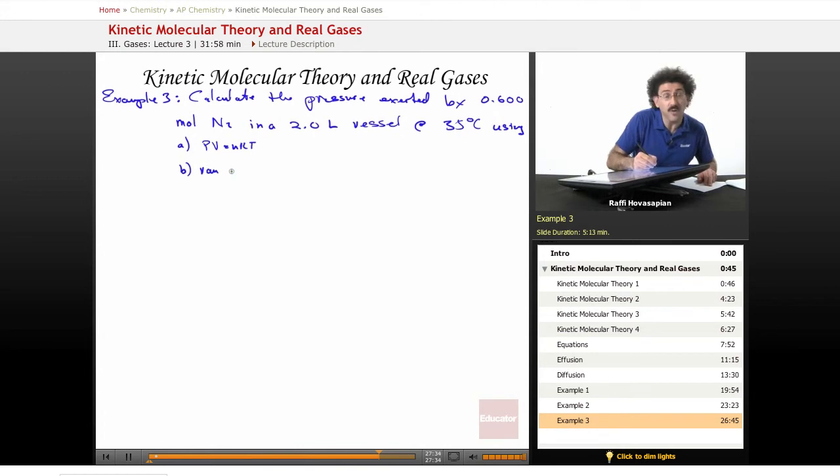The van der Waals equation was that adjusted one, the P minus A over n over V squared, that one. So we want to compare them to see how closely ideal behavior and non-ideal behavior is for this particular situation.